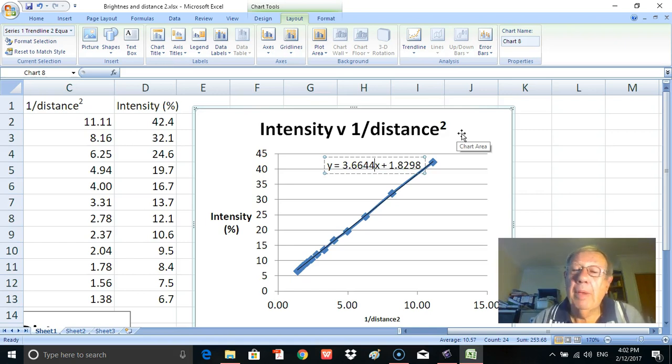So it applies not only to brightness versus distance. In other words, the further we are away from a bright object, the less bright it is in proportion to 1 over the distance squared.